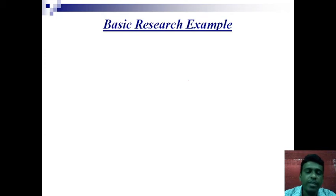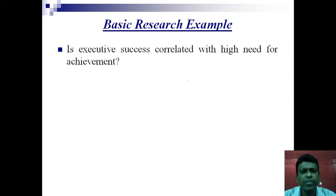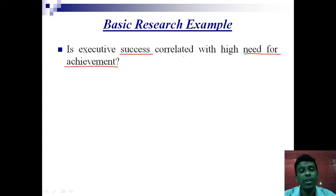Now let's look at basic research examples. Basic research is done not because there is a problem, but just to increase the knowledge pool of society and gain better understanding of a subject. For example, researching whether executive or employee success is correlated with a high need for achievement — this is basic research, because we are not going to directly apply it in an organization; it simply increases the knowledge pool of society. Similarly, researching whether members of highly cohesive workgroups are more satisfied than members of less cohesive workgroups is also basic research.